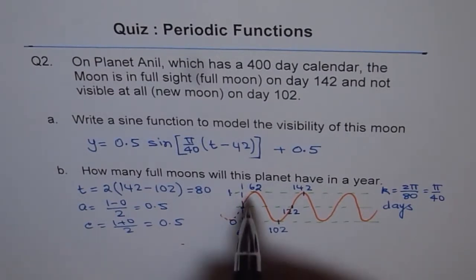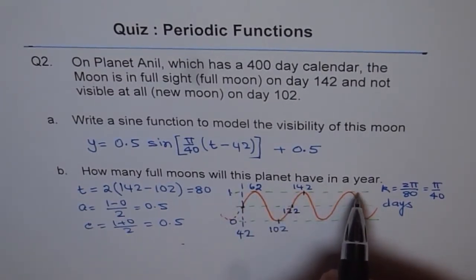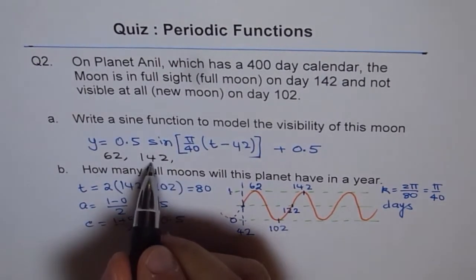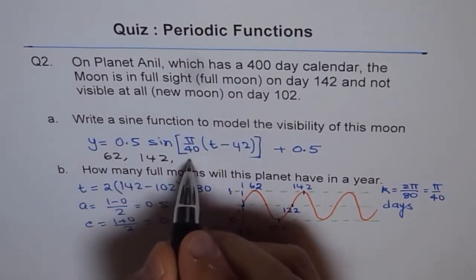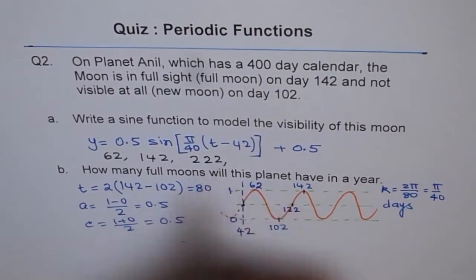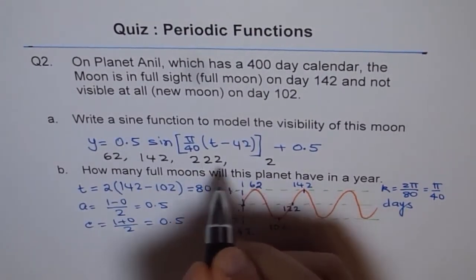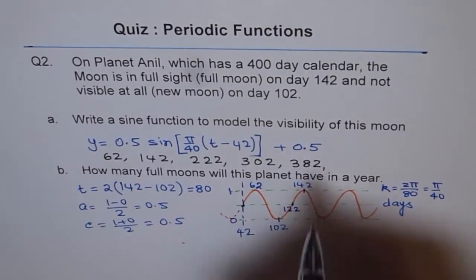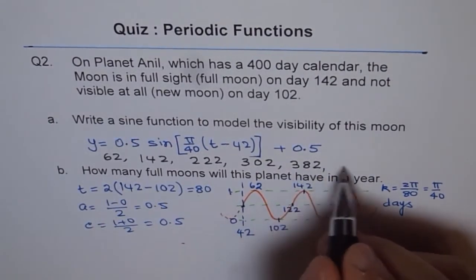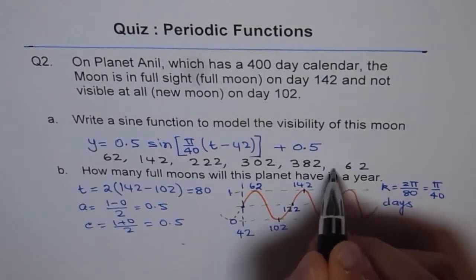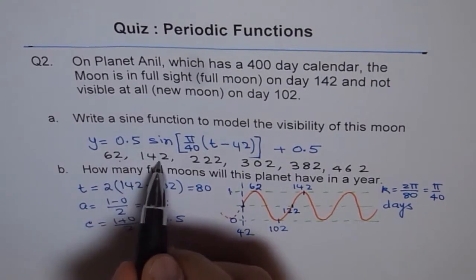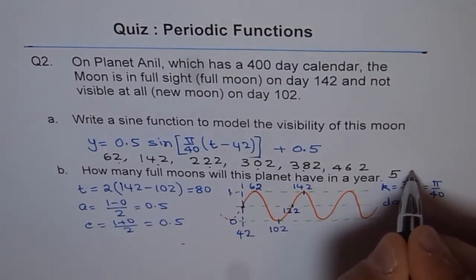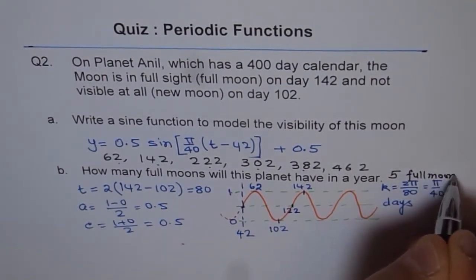So it is not a bad idea to just keep on adding 80 to this because that's the time period. So we'll write first full moon on 62, second is 142, then when we add 80 to it, 8 and 4 is 12, so 222, then again we add 80 to it, 302, then 80 will be 382. And now if you add 80 to it, it becomes 400 something, so 462, that is beyond the range. So you get 1, 2, 3, 4, 5. So you get 5 full moons.